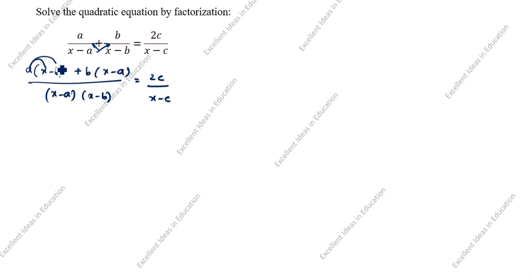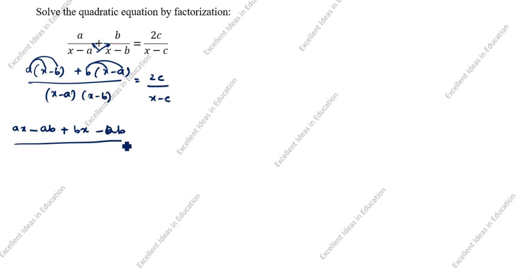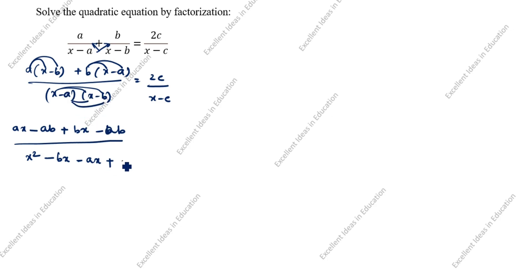Now we will multiply inside the bracket. A into x is AX, minus A into B is AB, plus B into x is BX, minus B into A is BA. So we have AX minus AB plus BX minus BA, divided by x minus A into x minus B. Multiplying the denominator: x into x is x squared, x into minus B is minus BX, minus A into x is minus AX, minus A into minus B is plus AB, equal to 2C divided by x minus C.